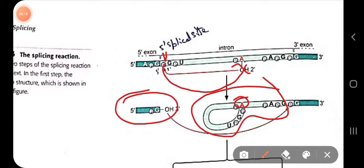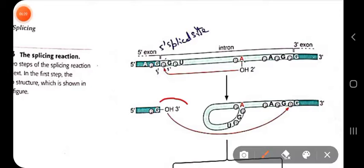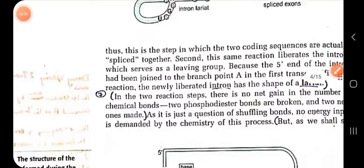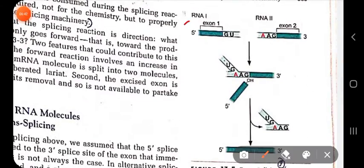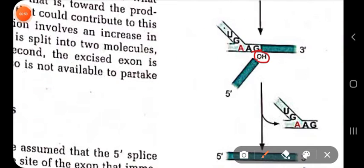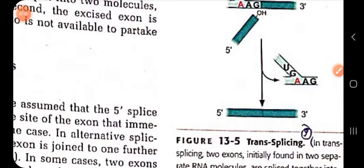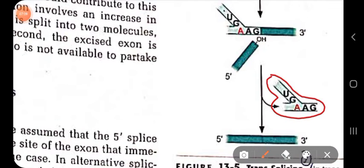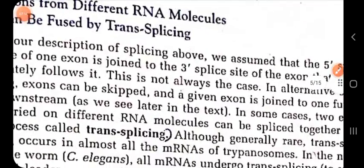The 2'-OH group found on the five prime end of the exon carries out nucleophilic attack — a transesterification reaction — with the three prime splice site. In trans-splicing from two different mRNA molecules, the OH group carries out the second reaction with the next mRNA having the three prime splice site, joining them to form a functional mRNA. The introns do not form a lariat ring but form a Y-shaped branch structure, which must be degraded after splicing.